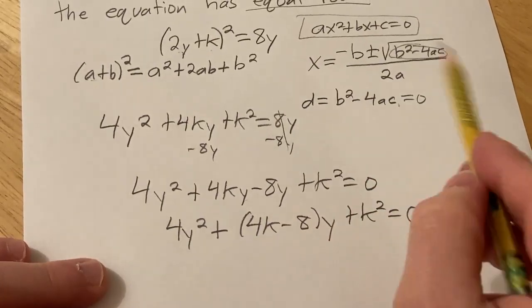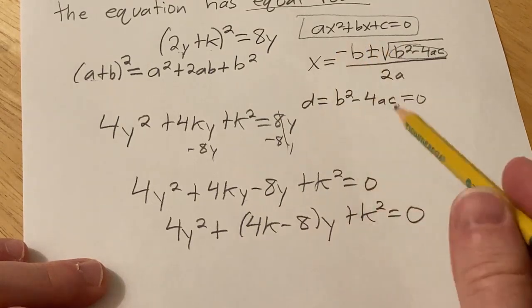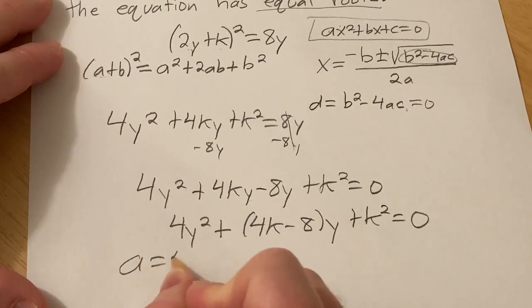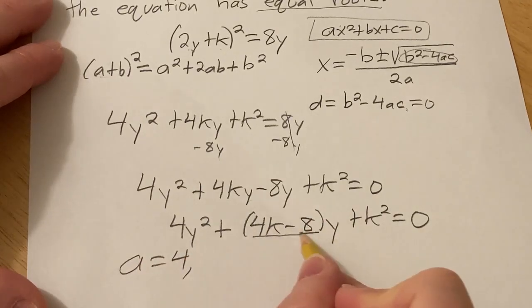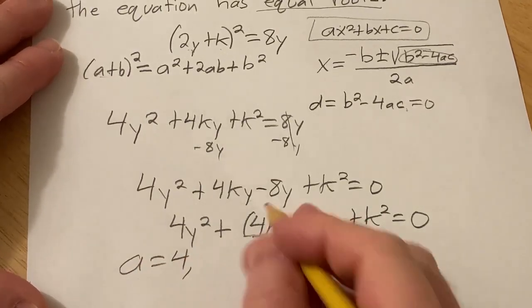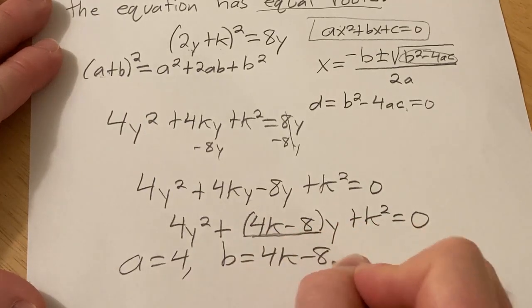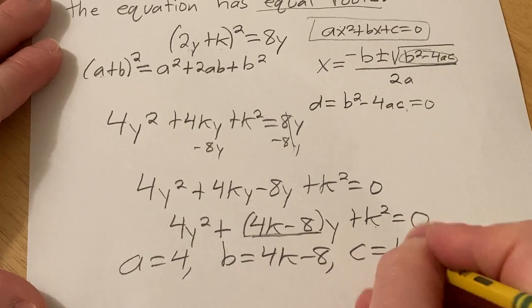So now you see it's in this form up here, it's the same as this. So a is 4, so I'm going to write that down. b is this entire piece here, it's the coefficient of y. So b is 4k - 8, and then c is k².